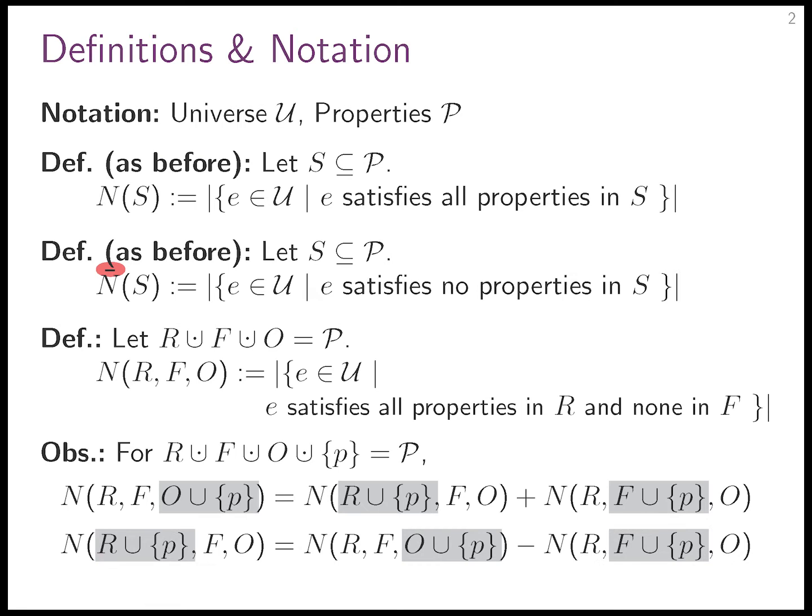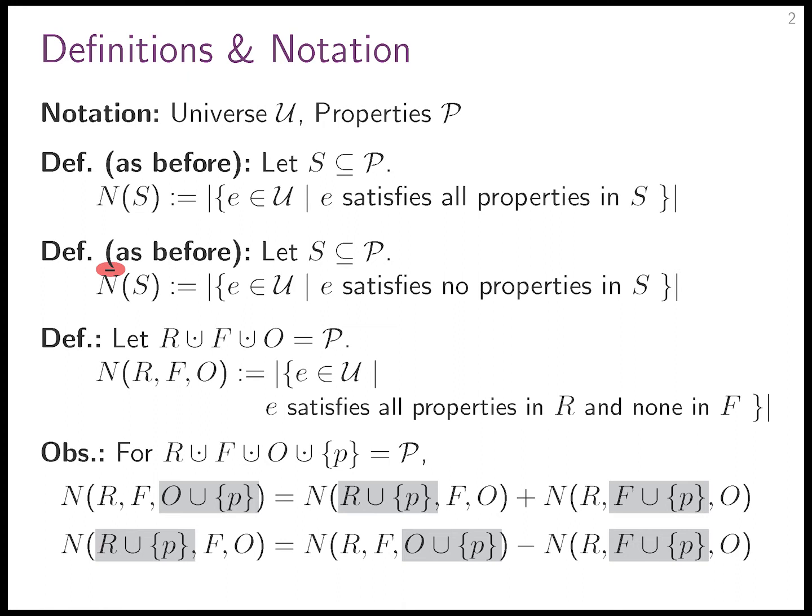Let's pull the term where we make P required to the left. We get the formula: required equals optional minus forbidden. N(R∪{P}, F, O) equals N(R, F, O∪{P}) minus N(R, F∪{P}, O). The number of elements having R and P and not F equals: elements having R and not F regardless of P, minus elements having R and not F and also not P.